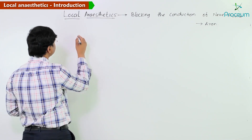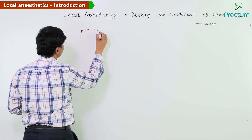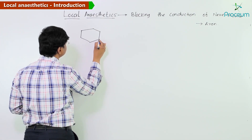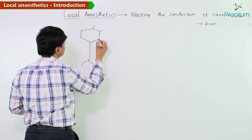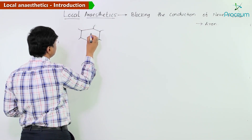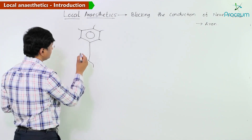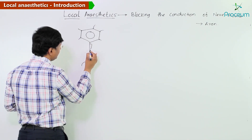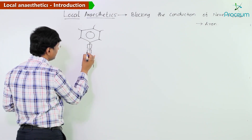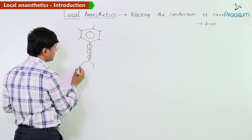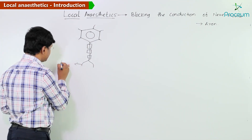If you take a neuron, this is the structure of a neuron — these are the dendrites, this is the cell body or the soma, and this is the axon. Surrounding the axon we have the myelin sheath, and these are the nerve terminals.